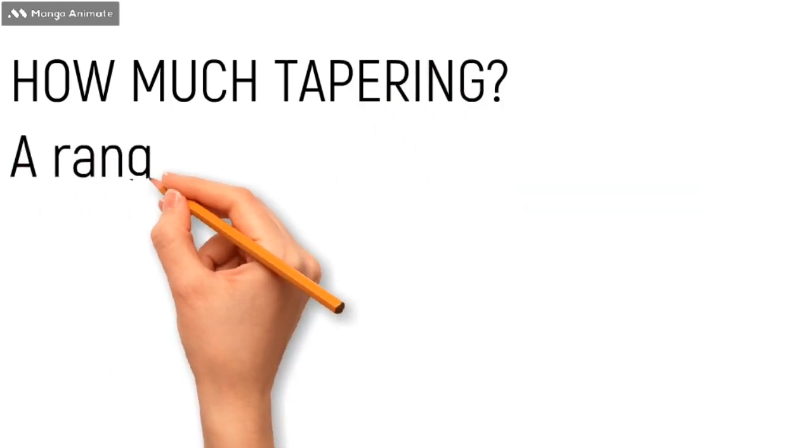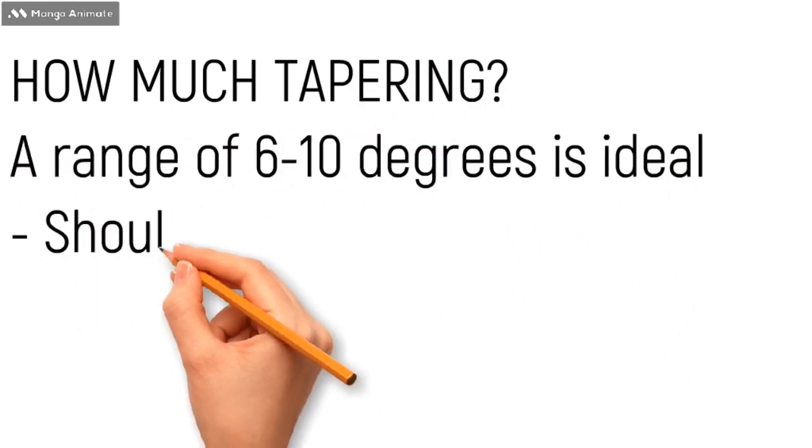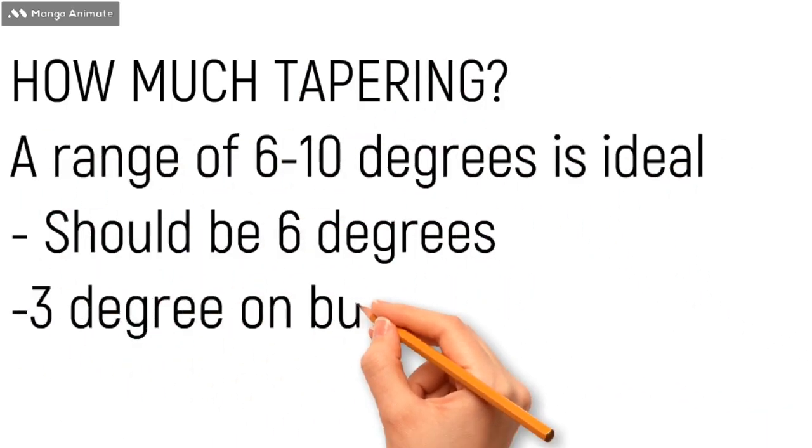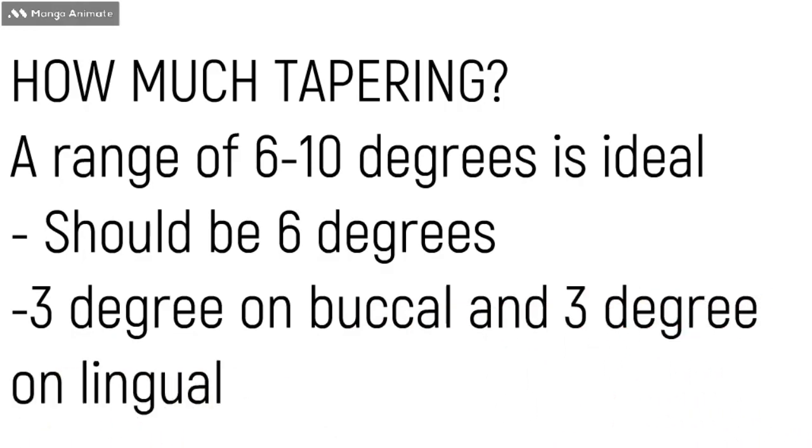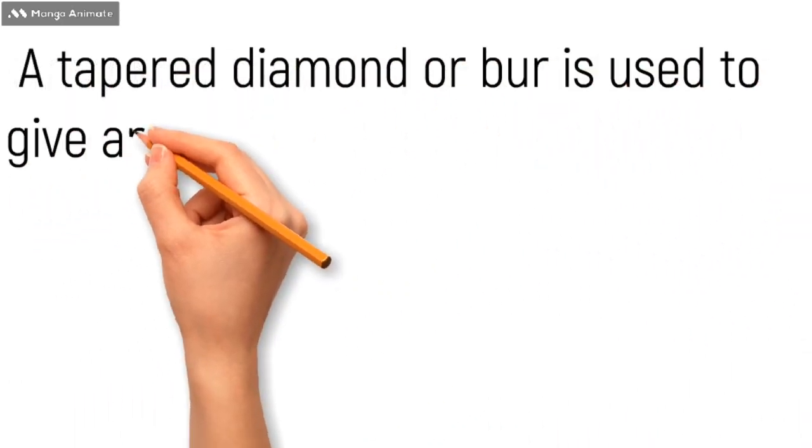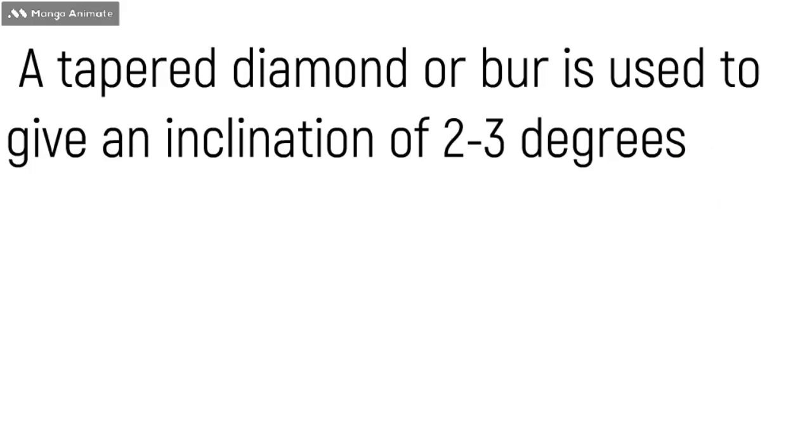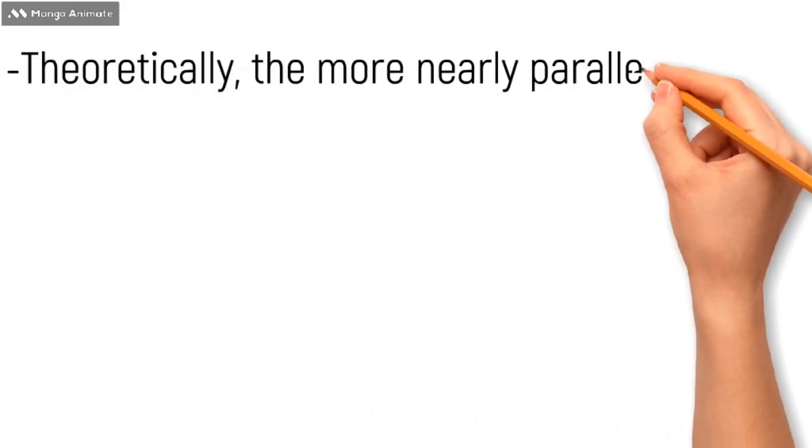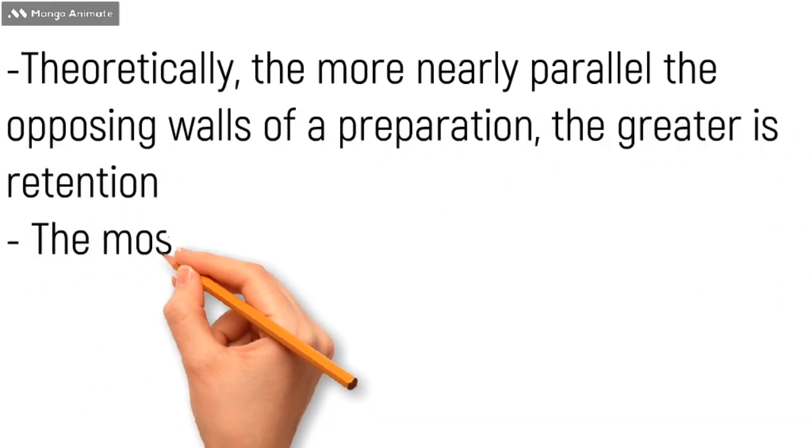How much tapering is required? A range of 6 to 10 degrees is ideal, but in Shillingburg it is written 6 degrees total—that is 3 degrees on the buccal side and 3 degrees on the lingual side. A tapered diamond bur is used for tapering, and this is how a tapered diamond bur looks like.